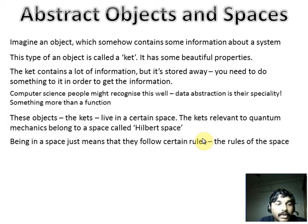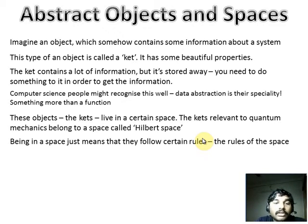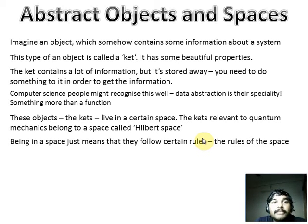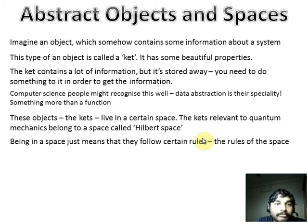Let's do something more concrete. These objects — these kets — live in a certain space. The kets relevant to quantum mechanics live in a space called the Hilbert space; we'll come to Hilbert spaces in the next lecture. Living in a space means they abide by the rules of that location. For example, if a ket lives in a space where everything is red, then the ket has to describe something which is red.